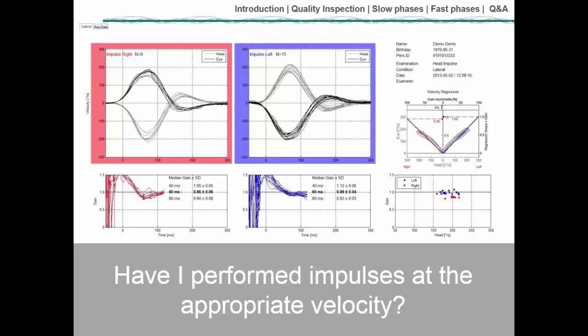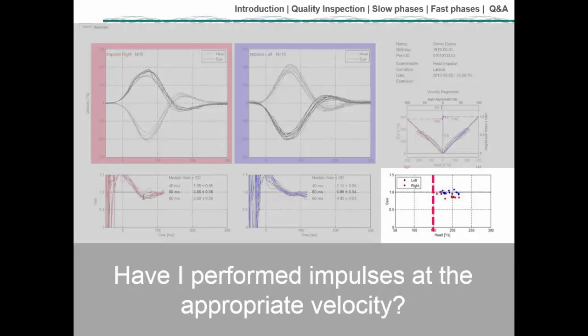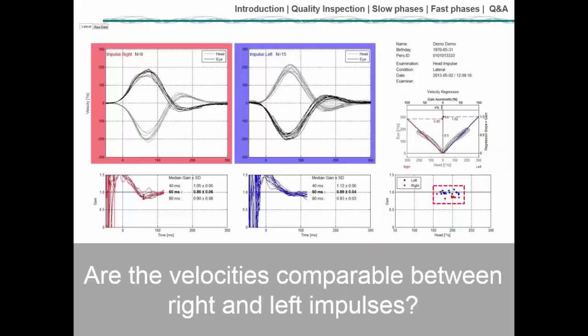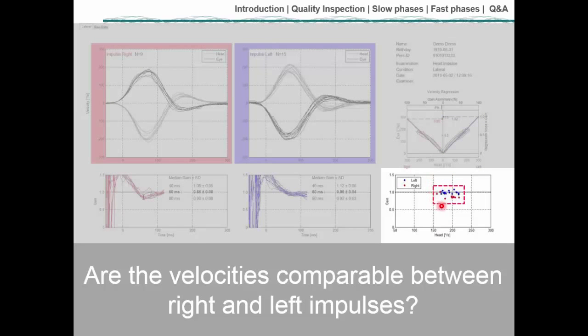Check whether impulses were performed at appropriate velocity — too slow and you'll only be stimulating both sides rather than each lateral canal individually. Use the impulse velocity graph to draw an imaginary line at 150 degrees per second and confirm your data points are above it. Also confirm that left and right impulses are comparable by drawing an imaginary box around the dots and checking for an equal spread of blue left and red right dots.